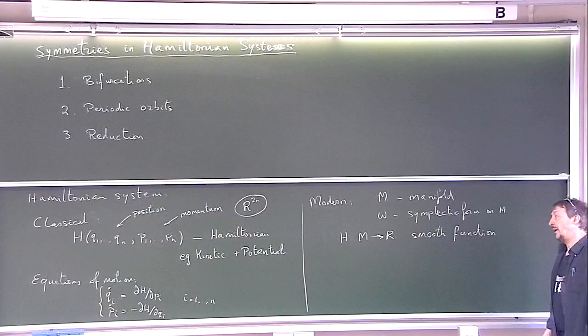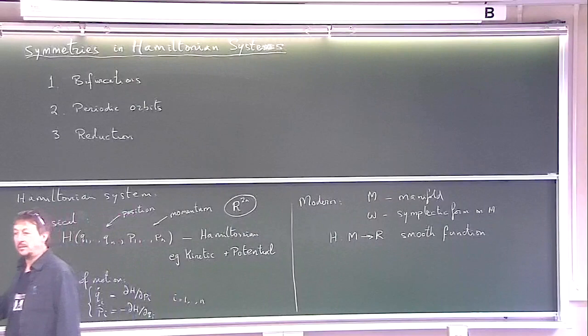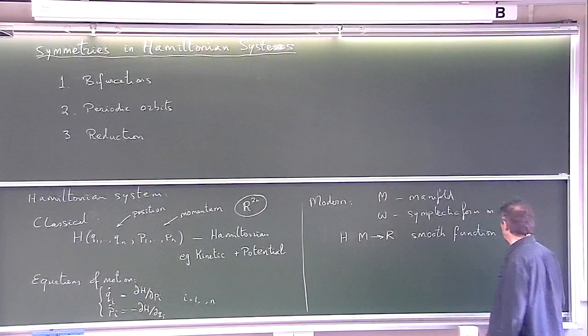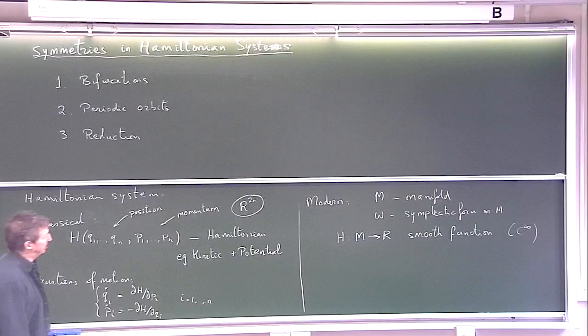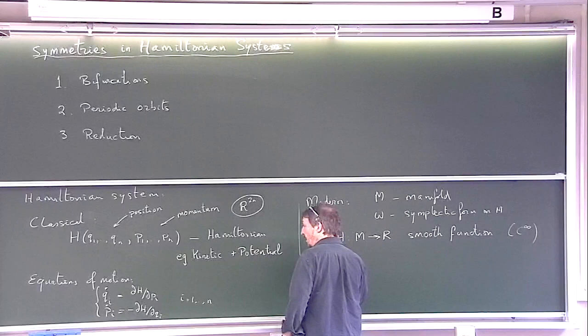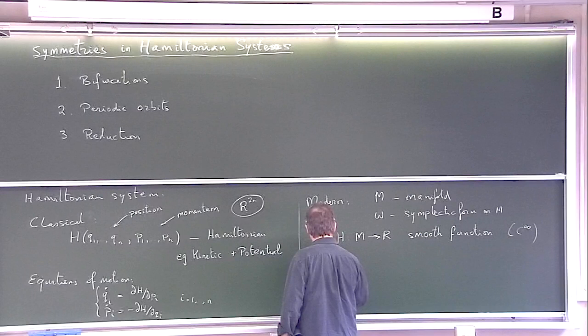The Hamiltonian is a smooth function. Smooth could mean C2, there's a famous paper of Moser where he assumes it's C333, I think, in KAM theory. C infinity - I don't worry about how many times it's differentiable. Many theorems are proved for analytic Hamiltonians. So the equations of motion are Hamilton's equations.